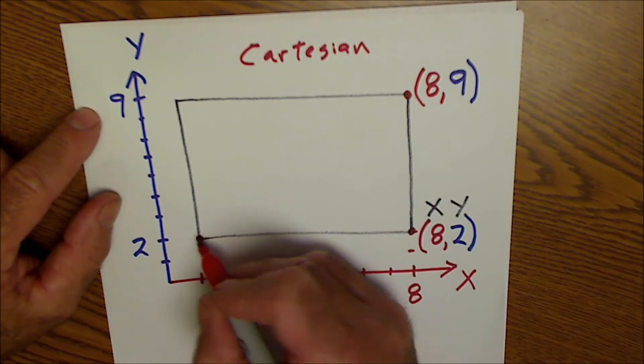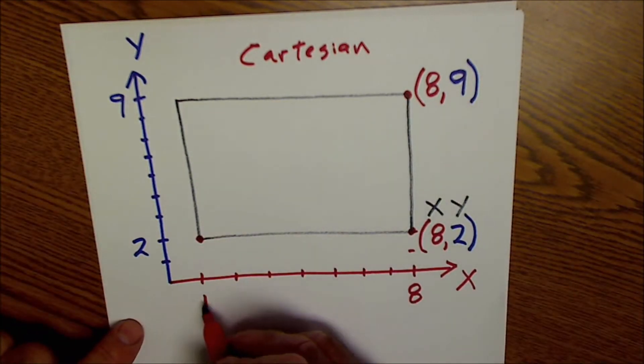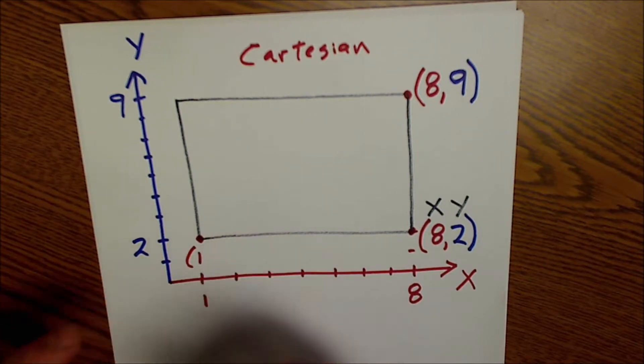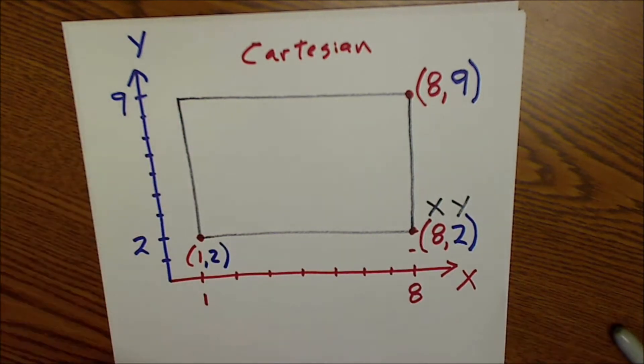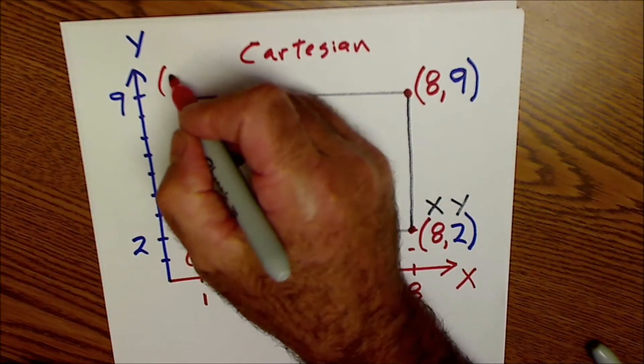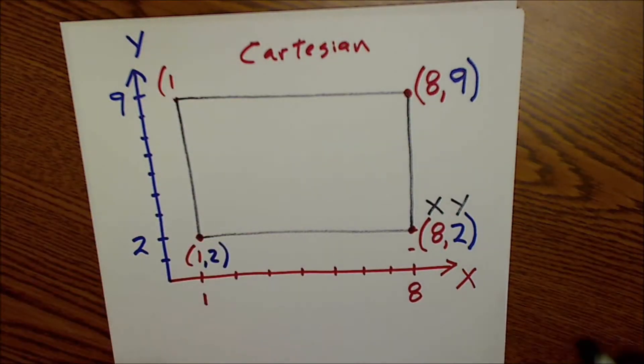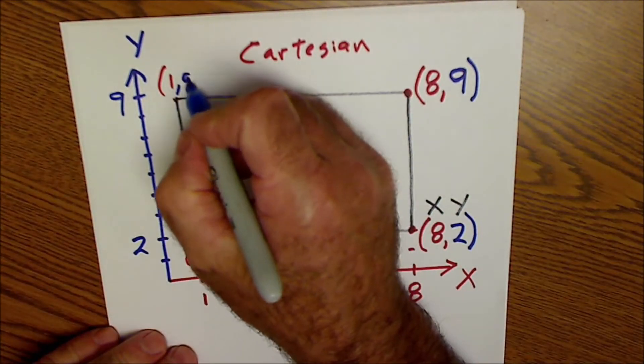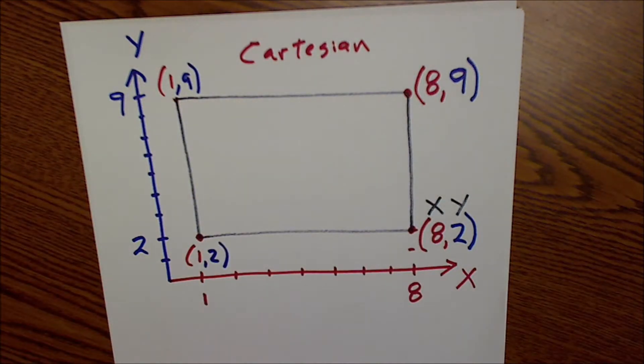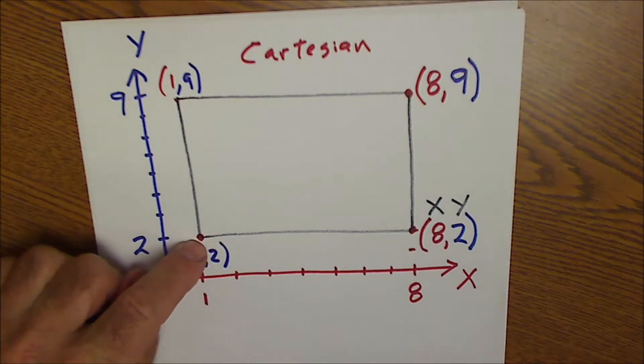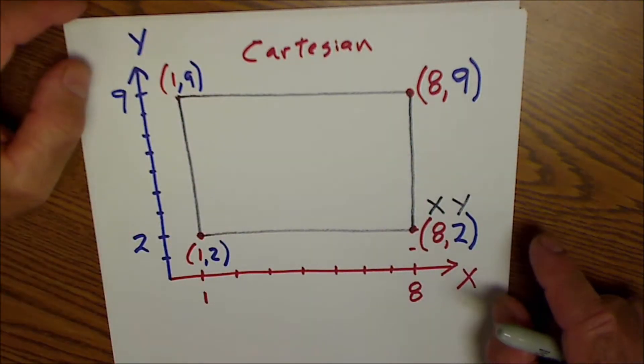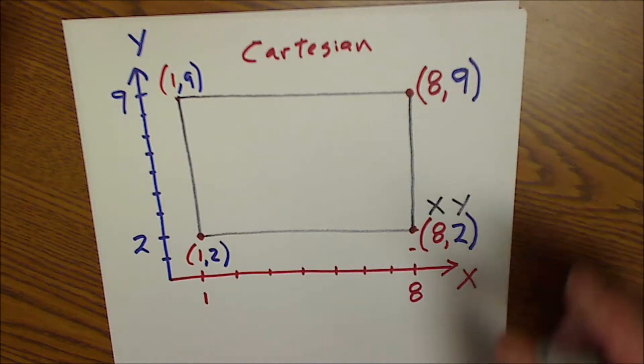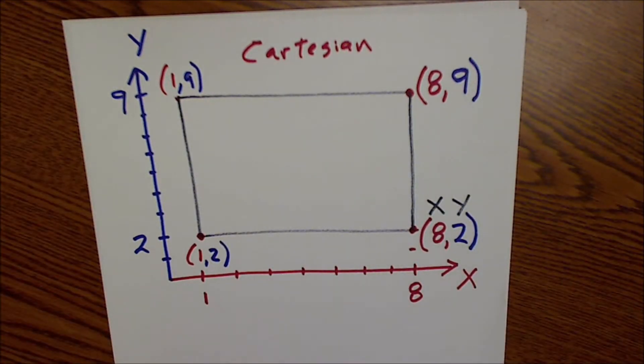This coordinate right here in the lower left corner will always be X first, so this would be 1 over and then 1, 2 up. So this would be the coordinate 1, 2 and then this coordinate right here would be 1 over 9 up. And that's kind of how a CNC router reads a part. There's a bunch of different ways but it could travel as a vector from this coordinate to this coordinate, then from this coordinate to this coordinate. So that's the overview. Let me go over a few other parts of Cartesian coordinates as well.